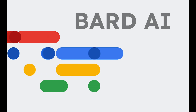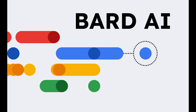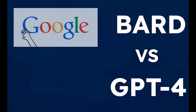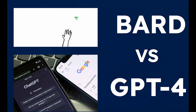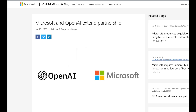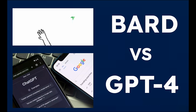Google just released Bard AI, its new AI-powered chatbot, to compete with OpenAI's recent release of ChatGPT4. And with Microsoft's recent partnership with OpenAI, these two tech giants are looking to lead the latest advancements in AI.